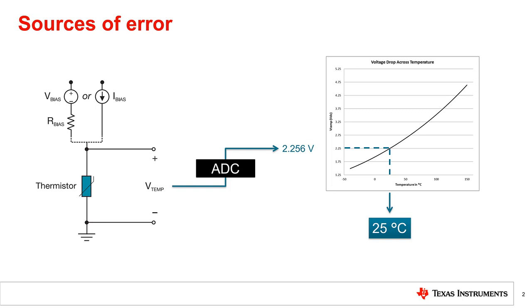However, when using thermistors, it is important to understand that you are creating a temperature sensing circuit in which the accuracy does not solely rely on the thermistor itself. This is in contrast to a more integrated solution, such as a digital temperature sensor, which eliminates many of the sources of error we will talk about right now.